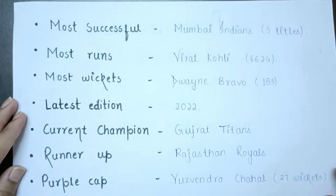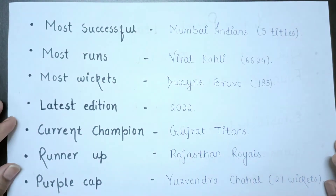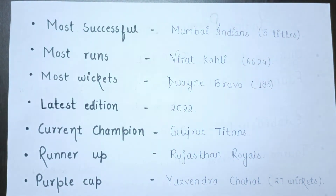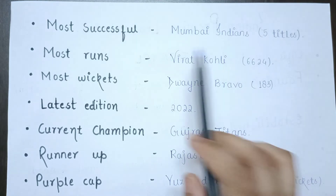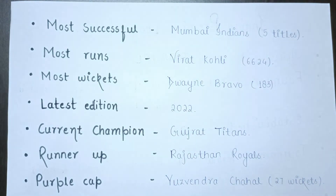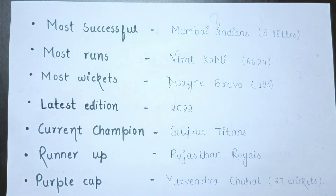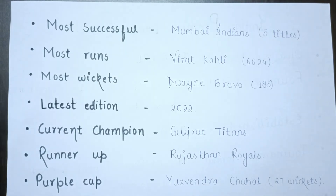Which is the most successful team? The most successful team is Mumbai Indians with 5 IPL titles. The second most successful team is Chennai Super Kings, who have 4 IPL titles.